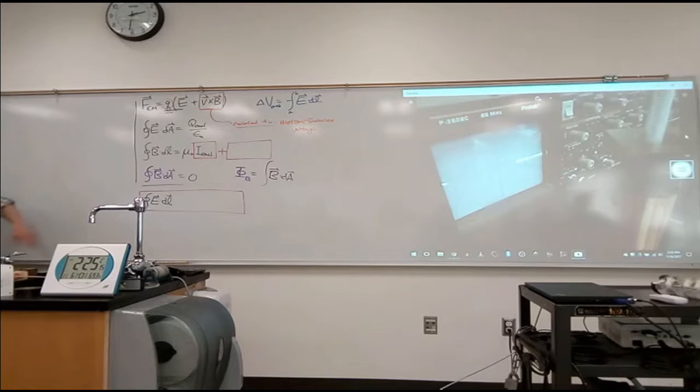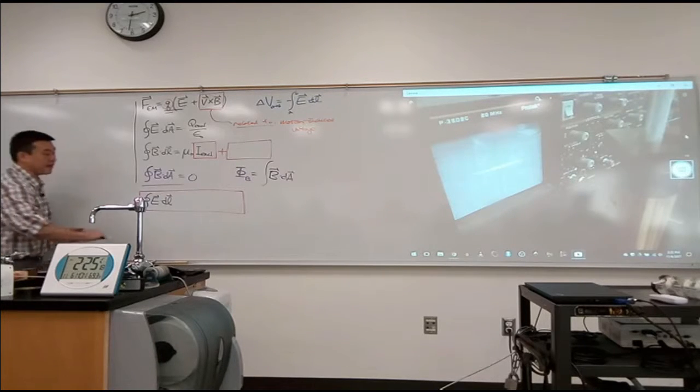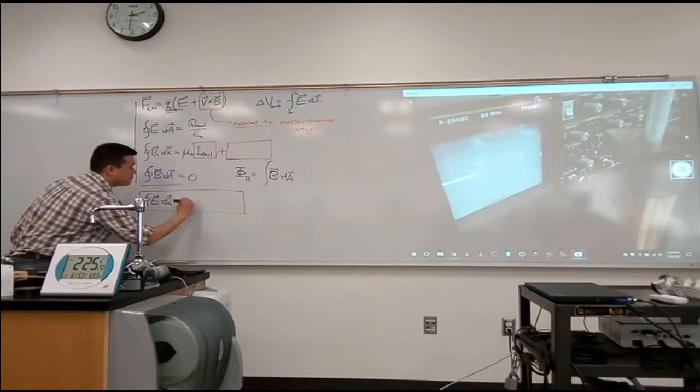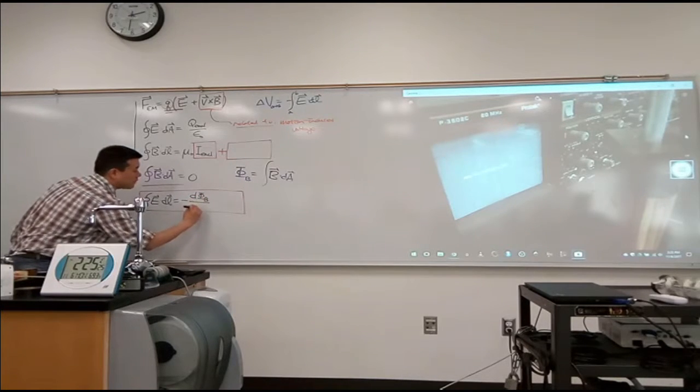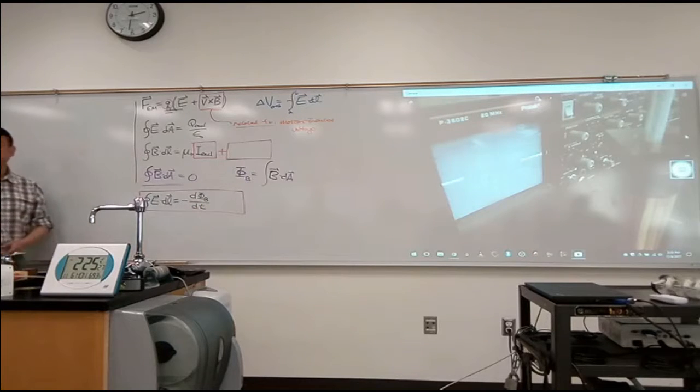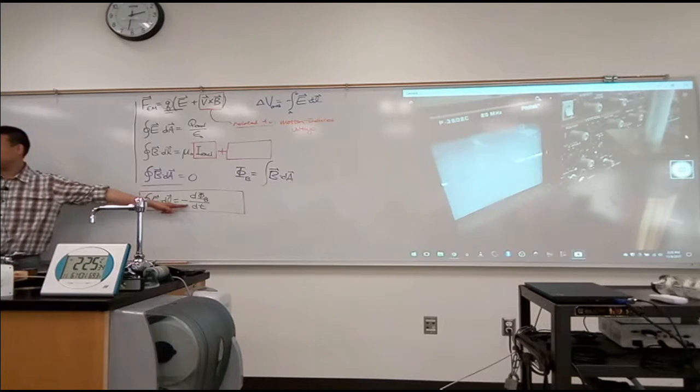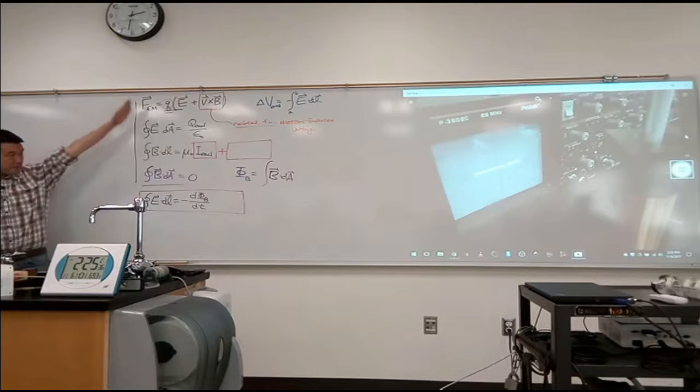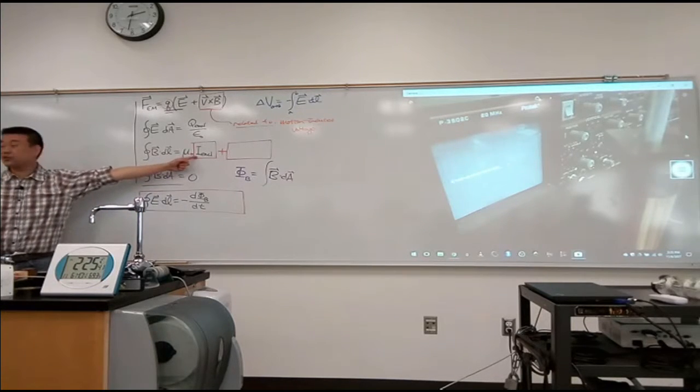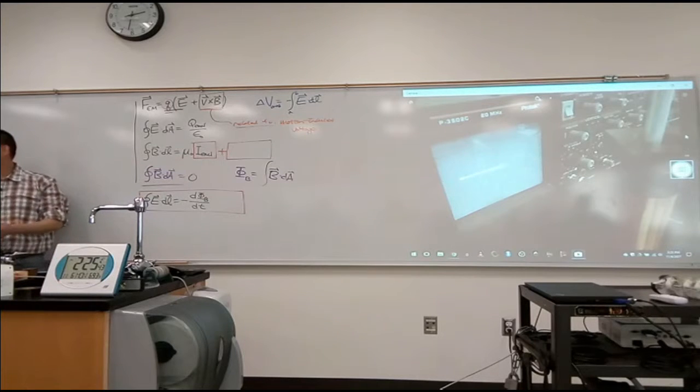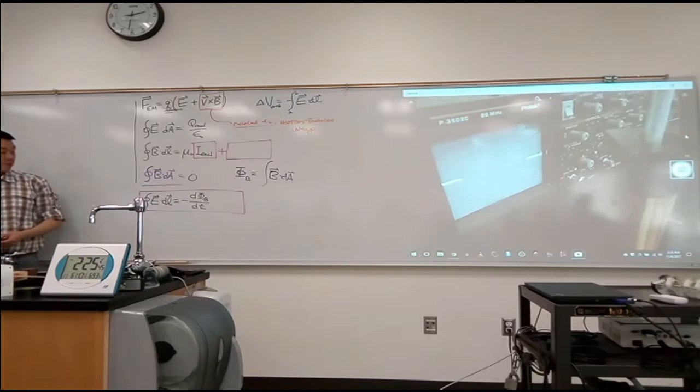So here, this voltage is going to be related to the magnetic flux this way, minus the rate of change of the magnetic flux. So there's a time derivative here. So far in specifying all of this, there wasn't really time derivative. I guess you could have put in some time derivative with the current, but we didn't. So this is Faraday's law.